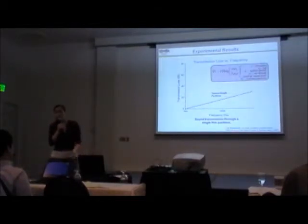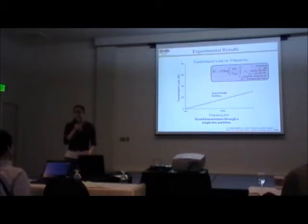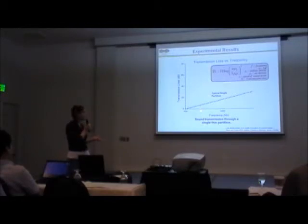Typically, for a single partition, like a wall or a piece of foam, the relationship between transmission loss and frequency is linear when frequency is plotted on a log scale.